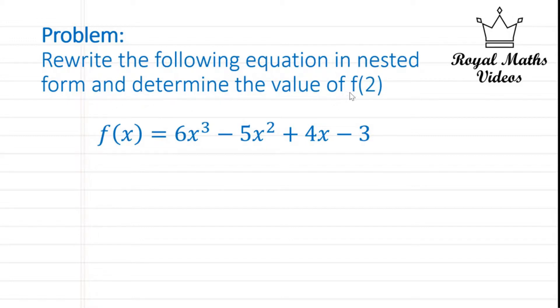So the function f(x) is equal to 6x³ - 5x² + 4x - 3. Now this is a polynomial equation with different values of x exponentially. Let's find out how we can rewrite this equation for the function of 2.